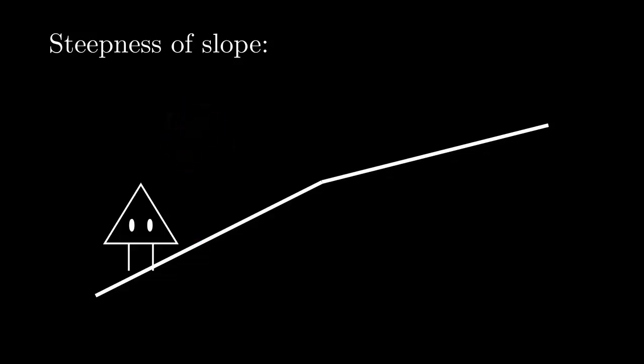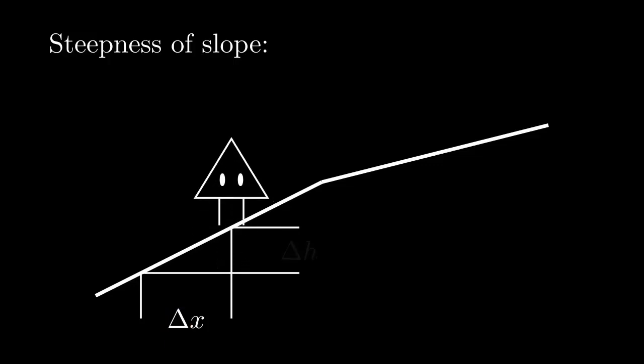The next question: How steep is the slope? How can we measure its steepness? You can figure out how steep it is by moving a little bit along the slope. We can decompose this movement into a horizontal and a vertical direction. I wrote this horizontal movement as delta x. Delta is a Greek letter, meaning change in. Then, you have the vertical movement, which is delta h.